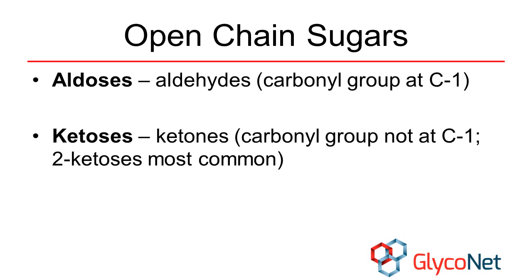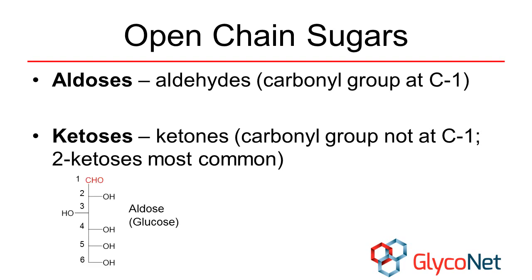Let's begin. Sugars can be classified into two groups, depending upon where the carbonyl group is located. Sugars with carbonyl groups at C1 are called aldoses, while sugars with the carbonyl at a different position are called ketoses. When we number the carbons in the backbone, we try to give the carbonyl group the lowest possible number. Glucose is one example of an aldose, while fructose is an example of a ketose.